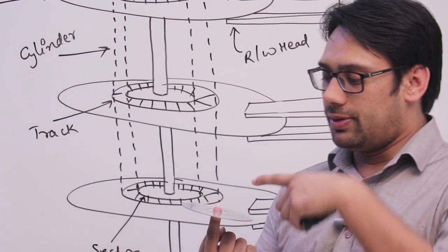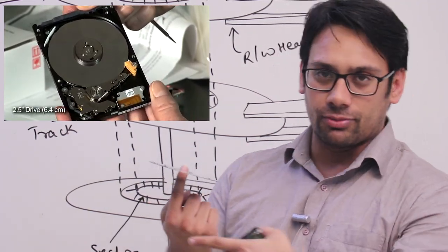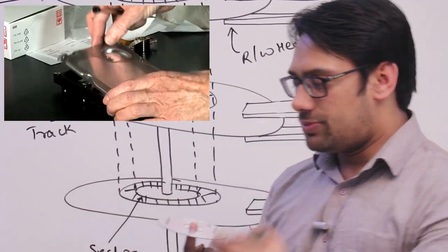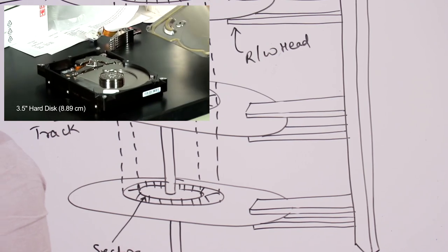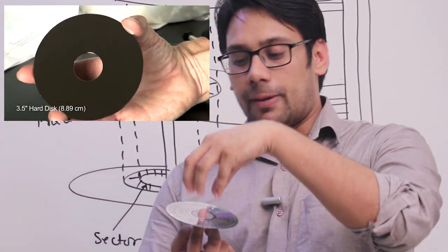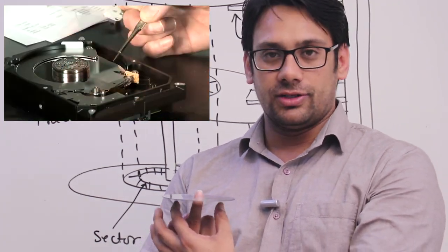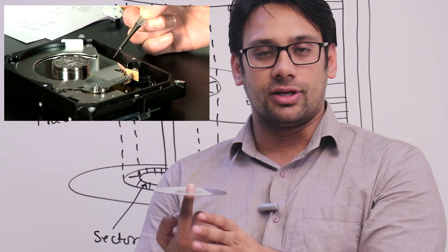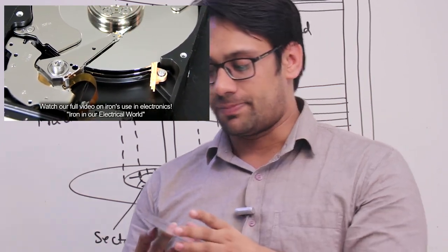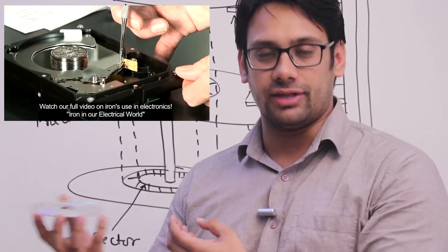Stacked over each other means there will be one disk, then one more disk under it, then one more under that — these are called platters or surfaces. Each platter has an upper surface and a lower surface. We can have one more disk with its own upper and lower surface. This disk is actually inside a hard drive.